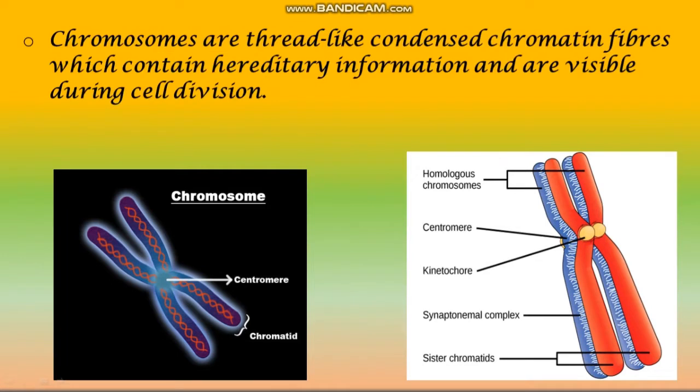Chromosomes are thread-like condensed chromatin fibers which contain hereditary information and are visible during cell division.